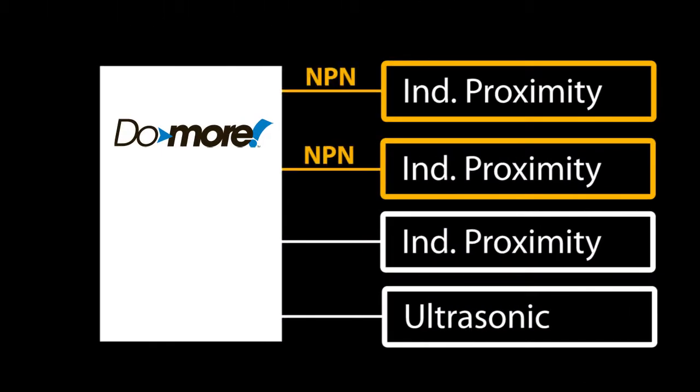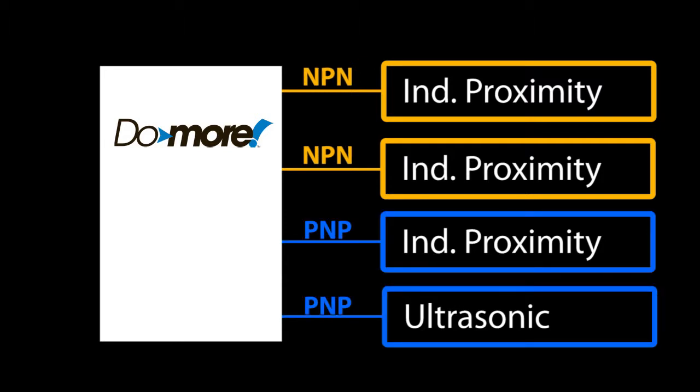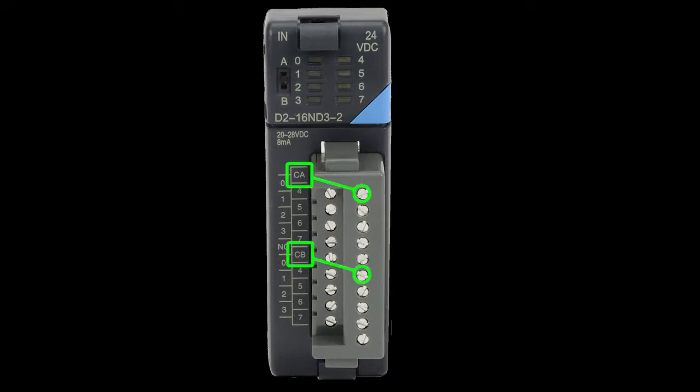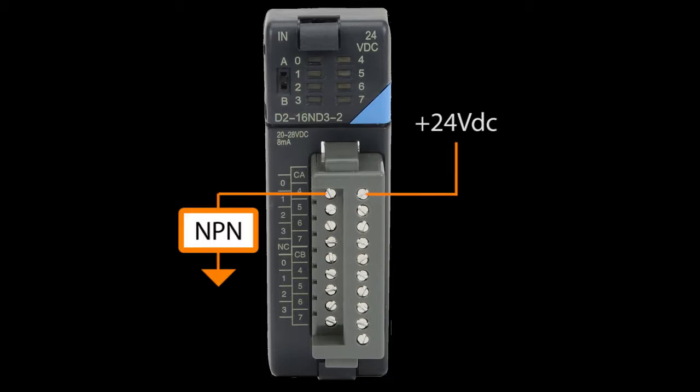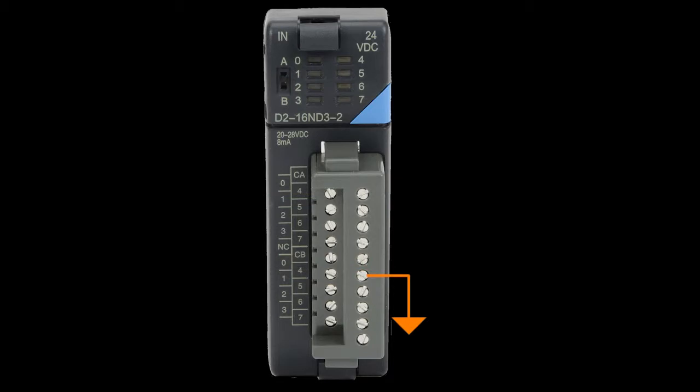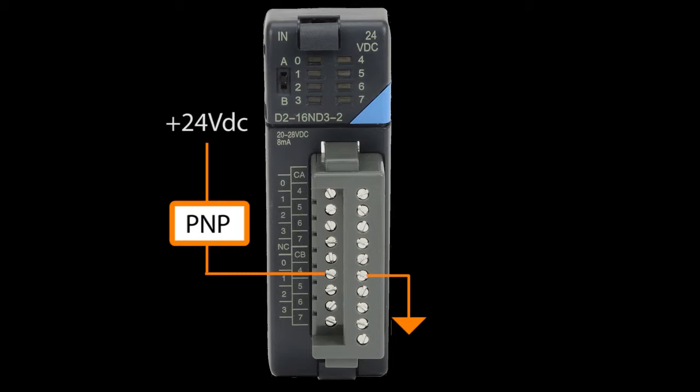Two of the proximity sensors are intentionally NPN and the other prox and ultrasonic are PNP – just so you can see how to connect the different sensor types to your controller. Since we have both types of sensors, we need to make sure the PLC input module can handle both NPN and PNP. This Do-more input module has two commons. That's perfect because we can simply connect one common to the positive voltage rail, so the NPN sensors can pull the IO terminal low when they activate. And we'll connect the other common to the negative rail, so the PNP sensors can pull the IO pins on the PLC up when they go active.